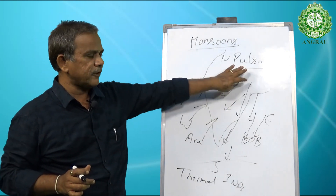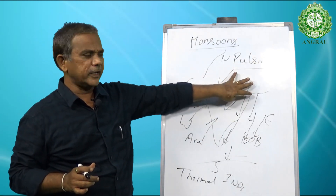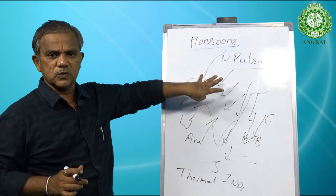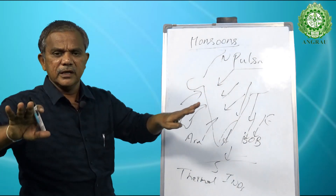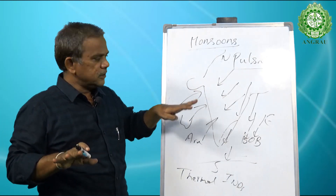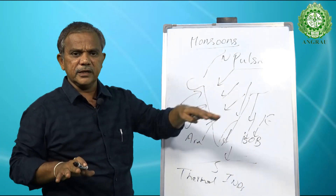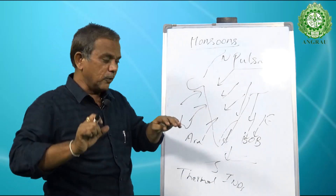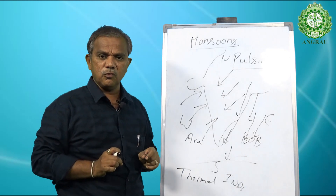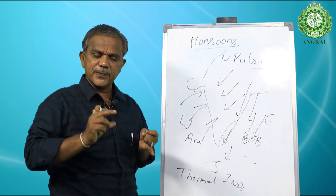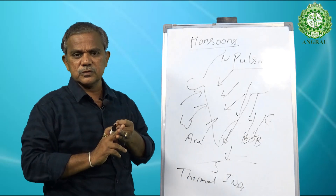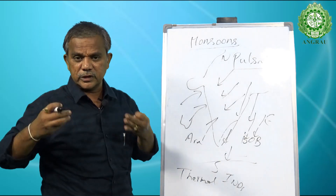It then progresses likewise to North India, and around June 20th we expect the entire country to receive monsoons. The monsoons are well-distributed across the country. The dry spells that occur also determine the quality of monsoons. The withdrawal of the monsoons is also very important.